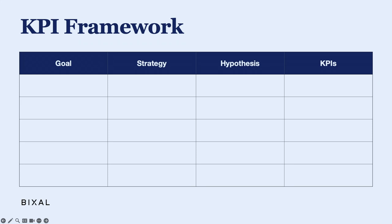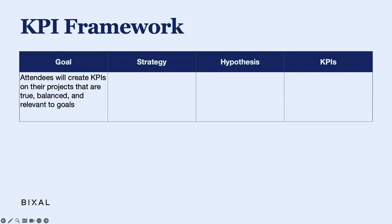Let's try an example. What is the goal of this talk? Attendees will create KPIs on their projects that are true, balanced, and relevant to goals. Usually we'll have three to five goals, but we'll start with just one. And it might surprise you, but we don't need the goal to be measurable — that's what the KPIs are for. It should describe what you want your project to accomplish and it can be a little broad.